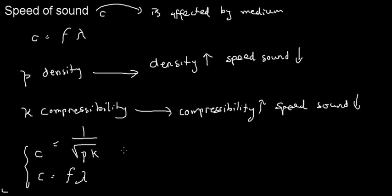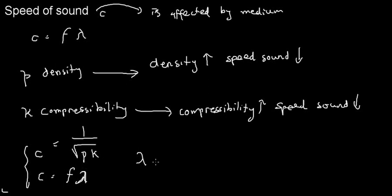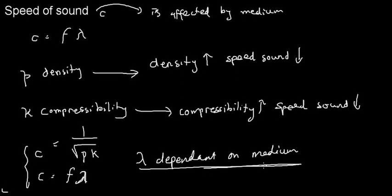This is important in case it comes up in a true-or-false or relation analysis question. We know that wavelength is dependent on the speed of sound, and we know that the speed of sound is dependent on the medium. So we can conclude that wavelength is also dependent on the medium's properties.